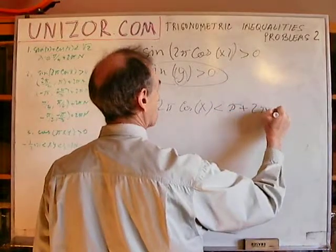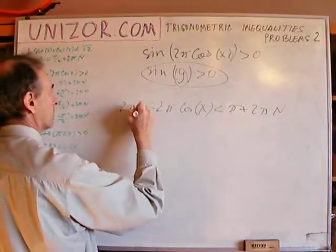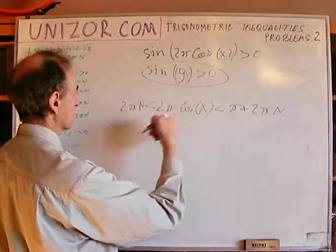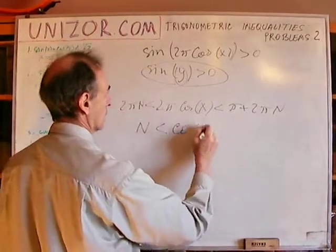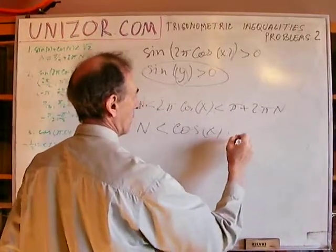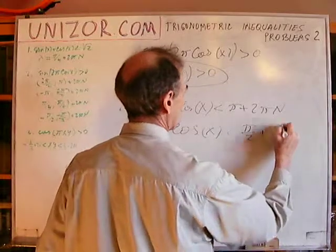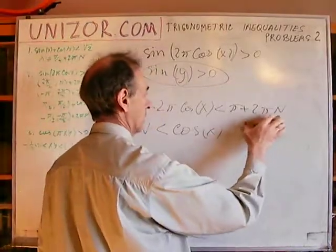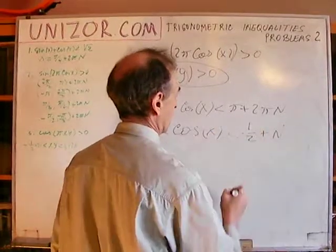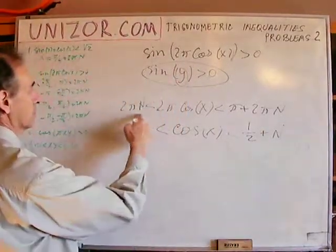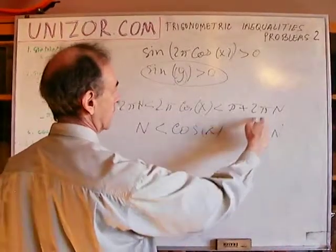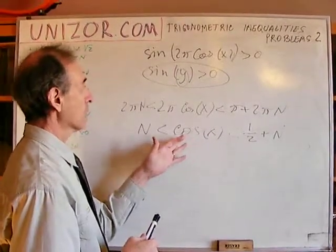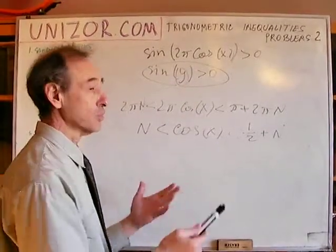What I want to say is that 2π·cosine(x) should be between 2πn and π plus 2πn. We should reduce by 2π — since it's positive, everything is fine. So we get cosine(x) between n and one-half plus n. That's what we have after dividing by 2π. This is basically a condition equivalent to the original one. We did not lose anything or add anything, so instead of solving the original equation, we will solve this.